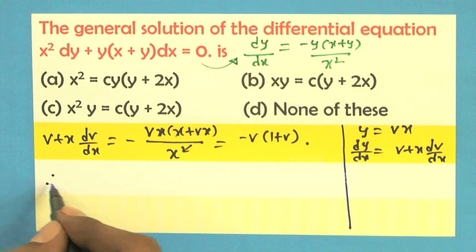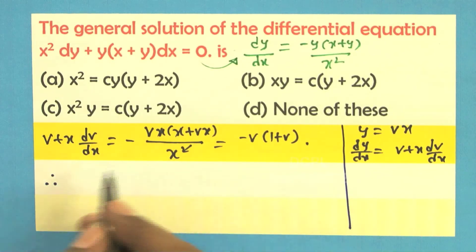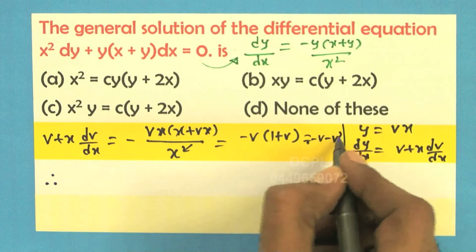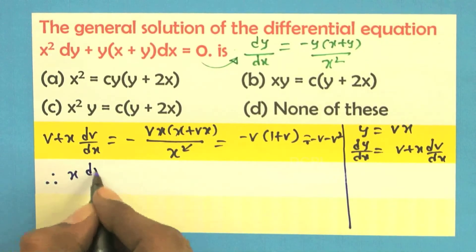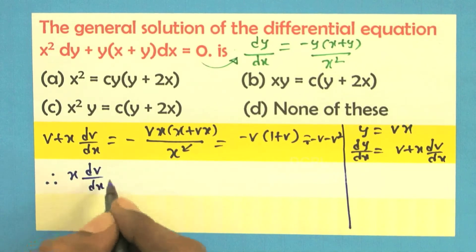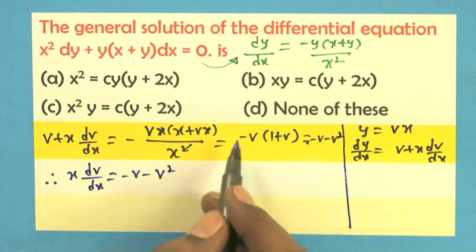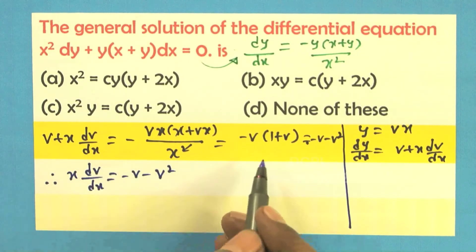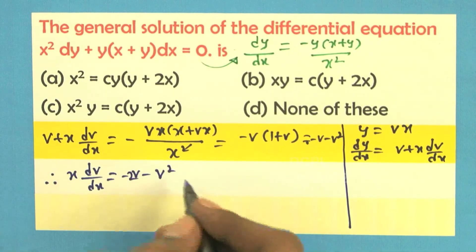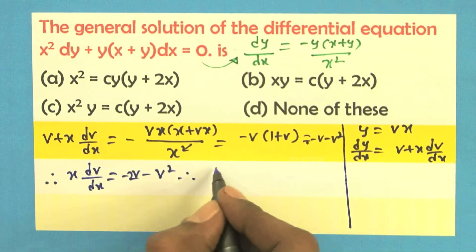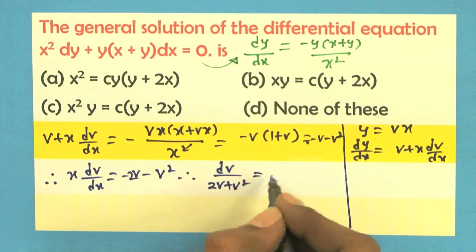Shift this v to the right hand side: minus v minus v squared. So x into dv by dx is equal to minus 2v minus v squared. Therefore, dv divided by 2v plus v squared is equal to minus dx by x.